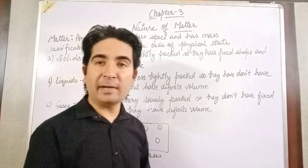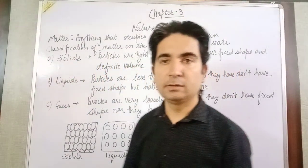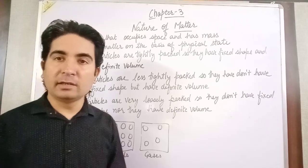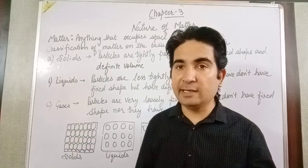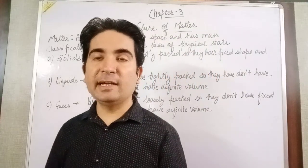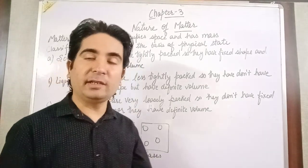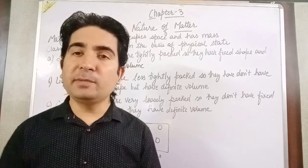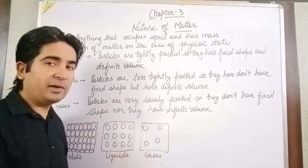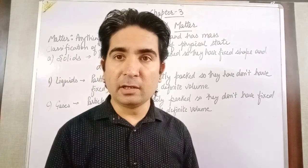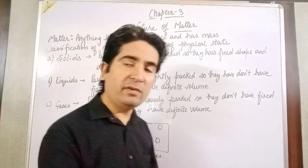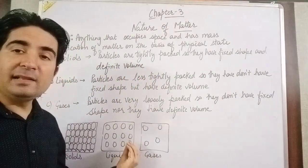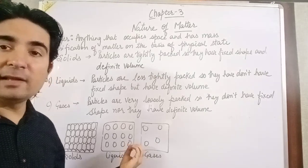Now if we talk about liquids, the best example is water. If I want to compress the water, what will happen? The shape will change. If I put it in a container, then in a jug, then in a glass, then in a tumbler, I will observe that its shape will change. That means we can say liquids don't have a definite fixed shape. But their volume — if one liter of water or five hundred milliliters of water — that will remain as it is. So in liquids, they do not have a fixed shape but they have a definite volume.